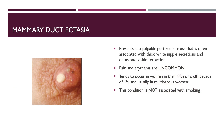Mammary duct ectasia presents also as a palpable periareolar mass that is often associated with thick, white nipple secretions and occasionally skin retraction. Pain and erythema are uncommon, as opposed to squamous metaplasia of the lactiferous ducts. Mammary duct ectasia tends to occur in women in their fifth or sixth decade of life and usually in multiparous women. This condition is not associated with smoking.